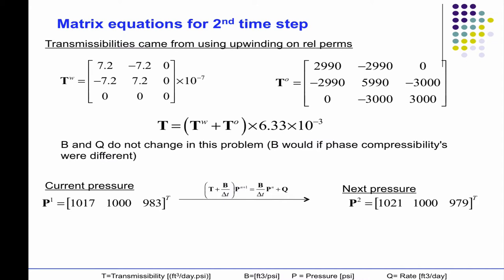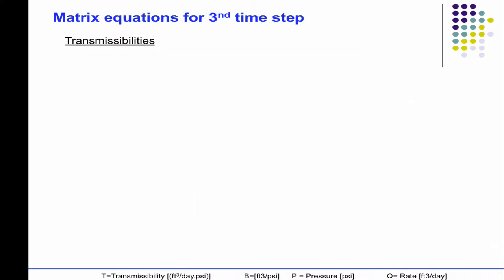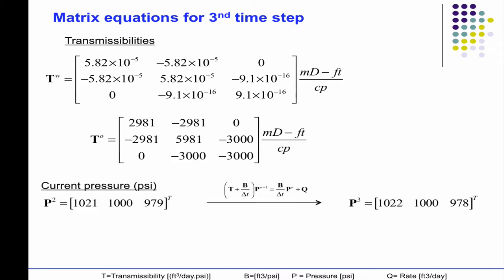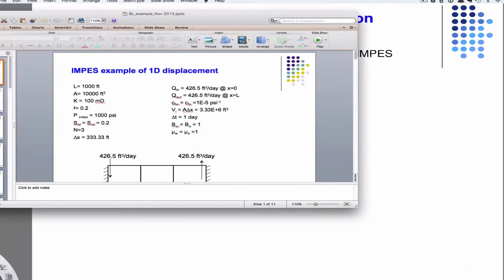Take the current pressure, solve another implicit step, take the current saturation. In this case, the only change was in the first one. Now take another step, you'll see it change again. So now the saturation's higher in the first grid block and moved a little bit in the second grid block. Take another time step, it's more of the same. Now you see that the saturations are even larger, still hasn't got to the third block yet.